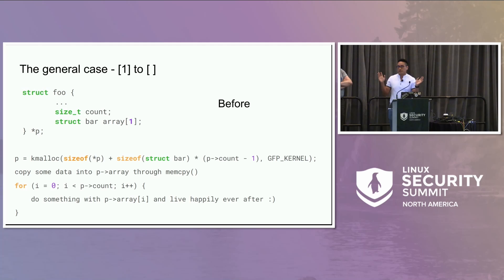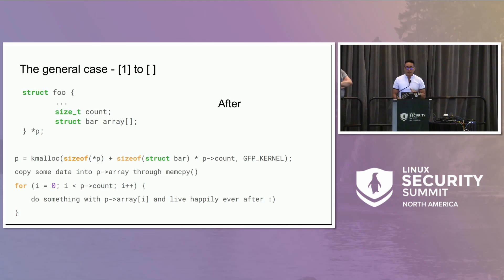The transformation is simple: remove the one from the declaration of the one-element array, and remove the subtraction from count. That's it — that is the solution. The sad thing is that this is maybe one percent of the cases we have in the kernel. The real story is more complicated.